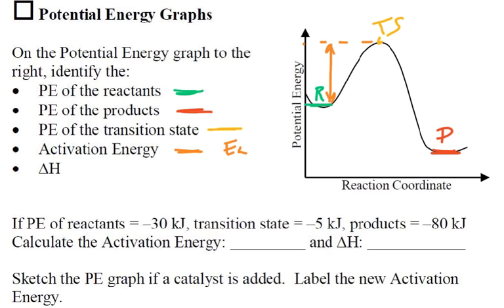And finally, the delta H would be the energy from the reactants to the products — so that's this one here. Notice in this case it's going to be final minus initial — it's always final minus initial. Small number minus a big number, so this is going to end up being a negative delta H — downhill, negative delta H.